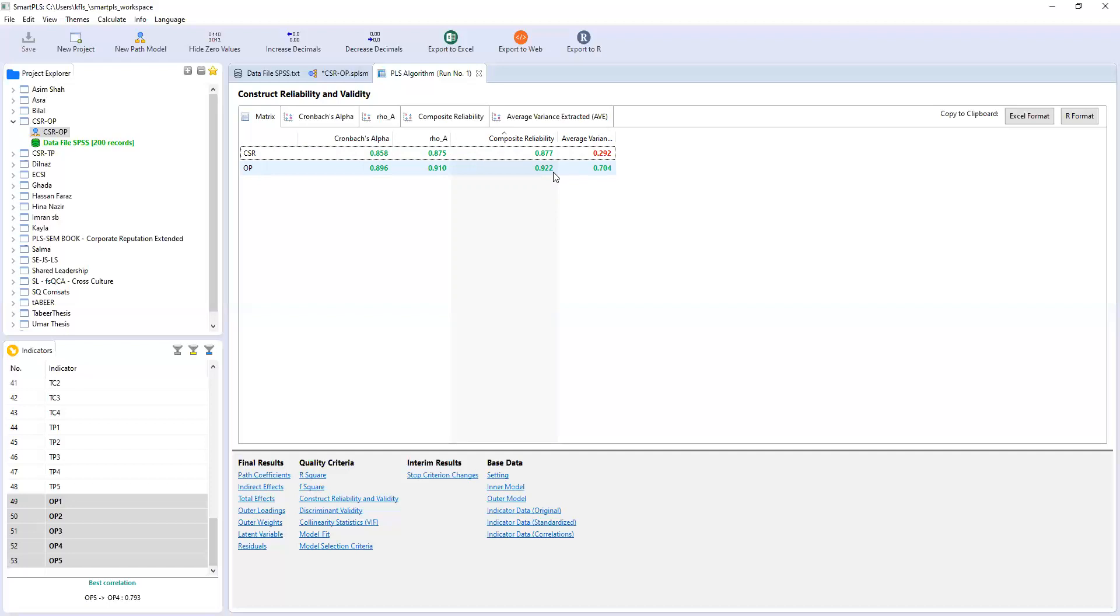So both of them are greater than 0.70, so the reliability or consistency of the results is not a problem. The problem is AVE for CSR. In our next lecture, we'll focus on how do we calculate AVE - average variance extracted - and how we can work to improve average variance extracted. Thank you.